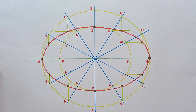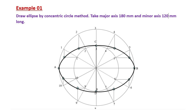In this video I'm going to explain how to construct an ellipse using the concentric circle method. I'm going to explain it using this example: draw an ellipse by the concentric circle method by taking the major axis as 180 millimeters and the minor axis as 120 millimeters. Let's see how to construct the ellipse using the concentric circle method.